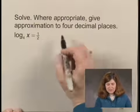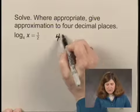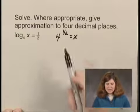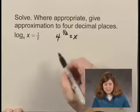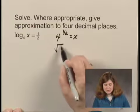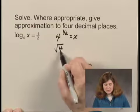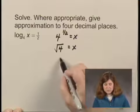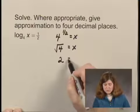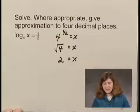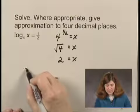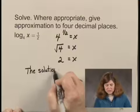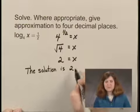The equivalent exponential equation is 4 to the 1 half equals x. 4 to the 1 half power is the same as the square root of 4, which equals 2. So x equals 2, and the solution is 2.